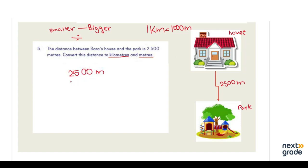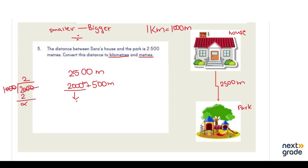We expand 2500 as 2000 plus 500. Both are in meters, so we divide. For 2000 meters, we ignore all three zeros of both numbers and get 2 kilometers. The remaining 500 meters stays as it is. So the distance between Sarah's house and the park is 2 kilometers and 500 meters.